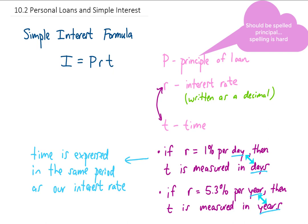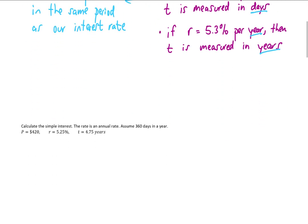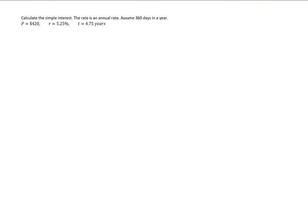Hit pause on the browser here if you want to write all this down, because I'm going to move on to the first problem where I show you how to use this simple interest formula. We want to calculate the simple interest. The rate is an annual rate. We're going to assume 360 days in a year. That's called the banker's rule, where we assume 30 days in every month and 12 months in the year.